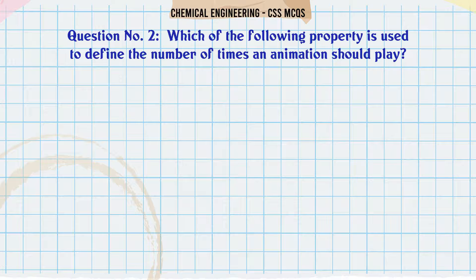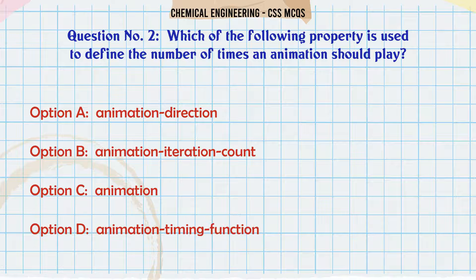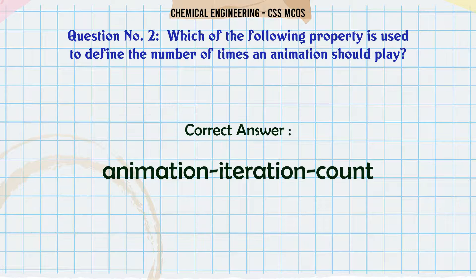Which of the following property is used to define the number of times an animation should play? A. Animation direction. B. Animation iteration count. C. Animation. D. Animation timing function. The correct answer is: Animation iteration count.